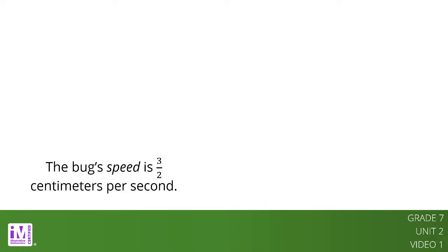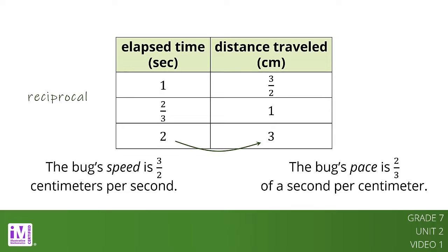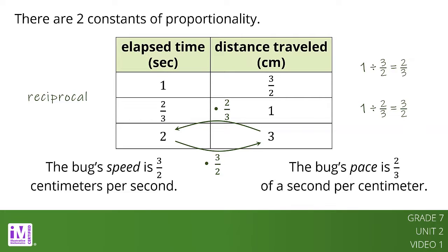Remember the first table we looked at for this relationship? We saw that the constant of proportionality was two-thirds, which meant that the bug's pace was two-thirds of a second per centimeter. Notice that three-halves is the reciprocal of two-thirds. Remember, dividing one by a number gives the reciprocal of that number. When two quantities are in a proportional relationship, there are two constants of proportionality, and they are always reciprocals of each other.